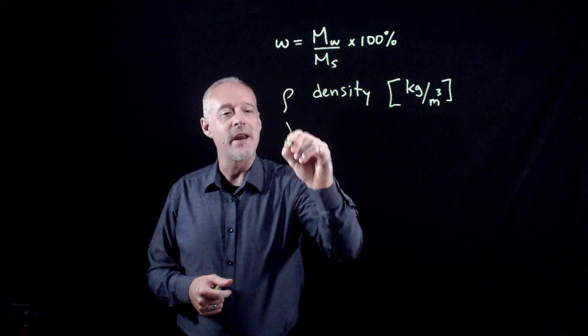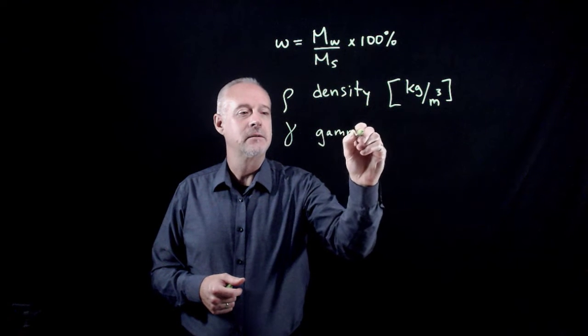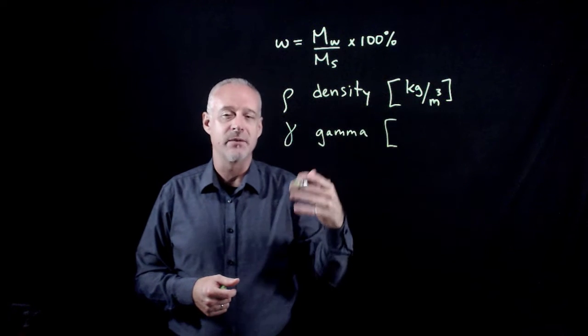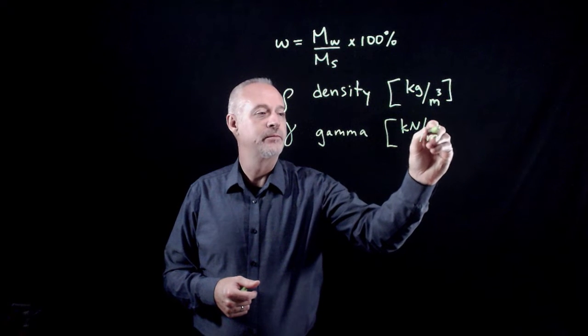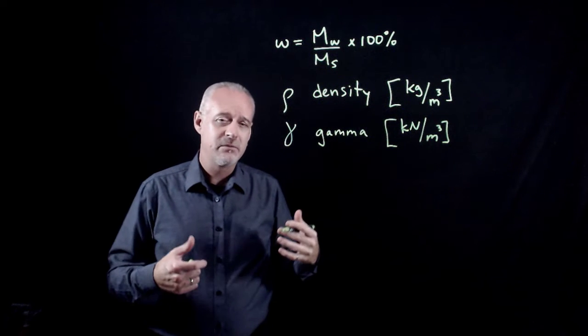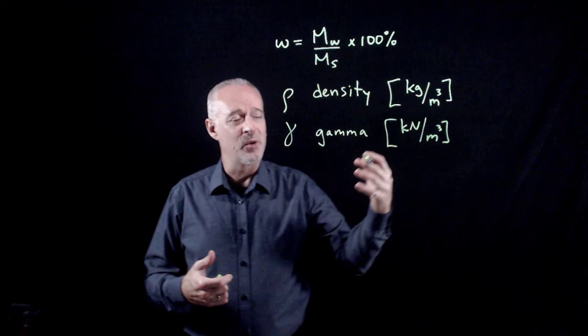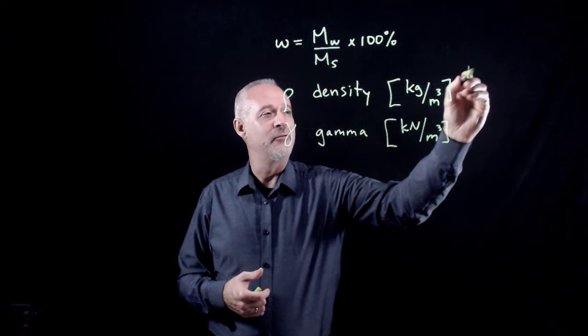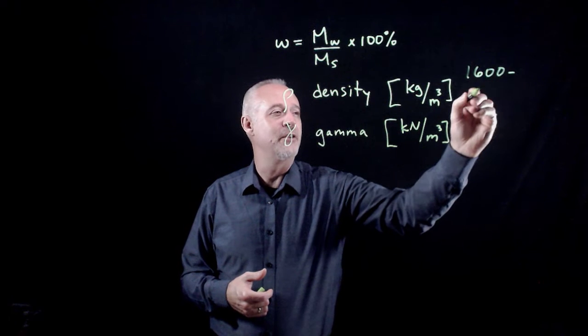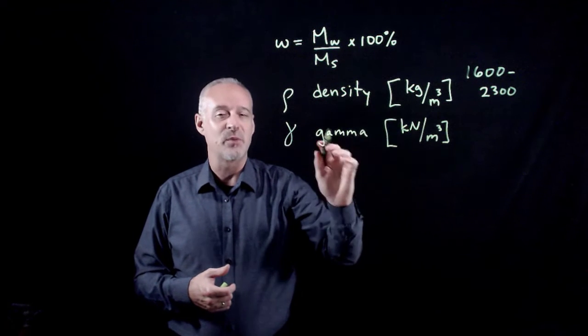For unit weight, we use the Greek letter gamma, and we express it most often in kilonewtons per cubic meter. It's useful to know, if you're doing calculations and you end up with numbers outside the range of 1600 to 2300 kilograms per cubic meter, then you've probably made a mistake.